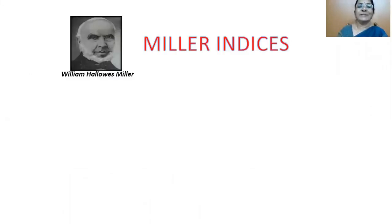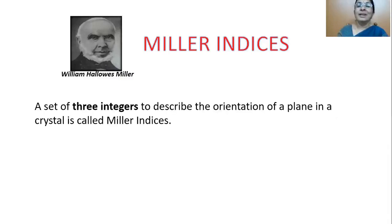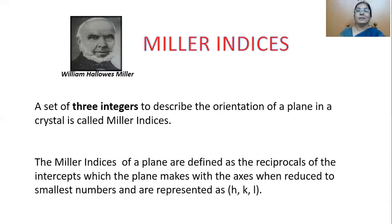Let us now discuss what are called Miller Indices. Miller Indices was suggested by William Hallows Miller. Miller Indices are a set of three integers used to describe the orientation of a plane in a crystal. The Miller Indices of a plane are defined as the reciprocal of the intercepts which the plane made with the axes, when reduced to smallest numbers, and are represented as H, K, L.